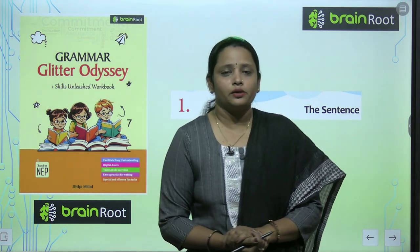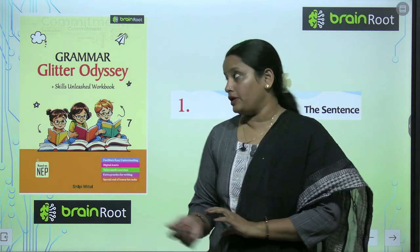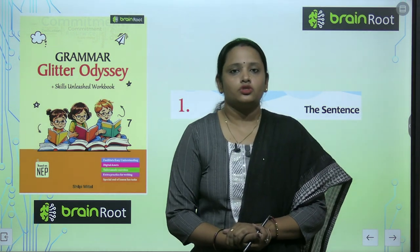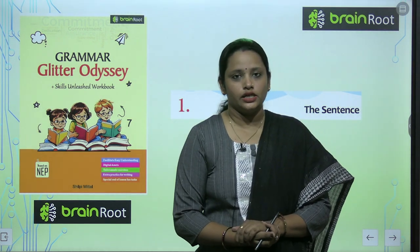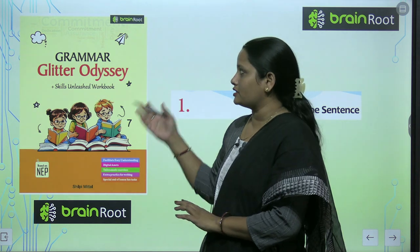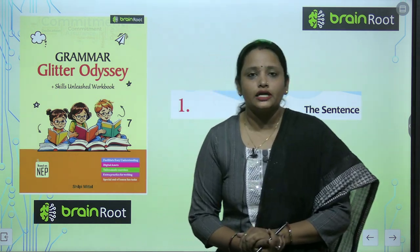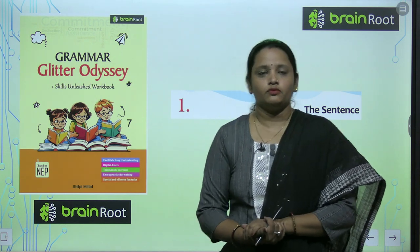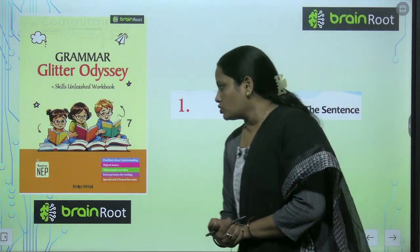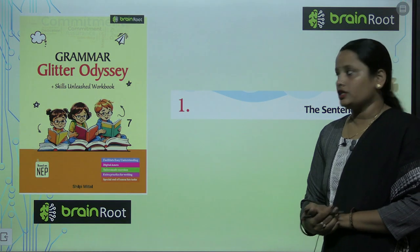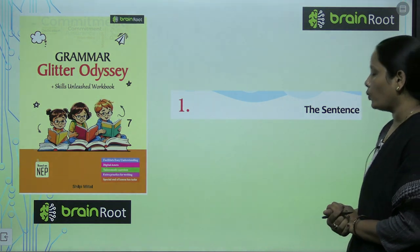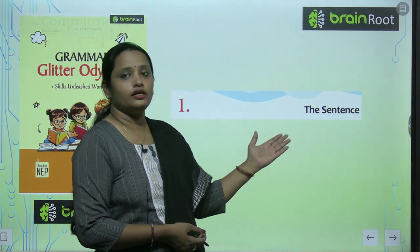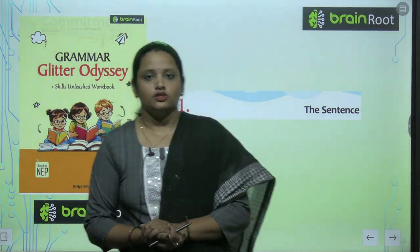Hello my dear kids, welcome back to the Brain Root series by Amit Publishing House. Today we are going to learn English grammar. The name of your book is Grammar Glitter Odyssey, and I am Vandana. We are going to start with chapter number 1, and the name of the chapter is The Sentence.